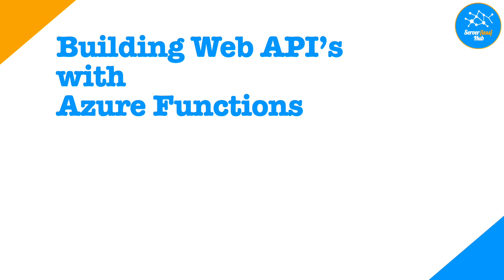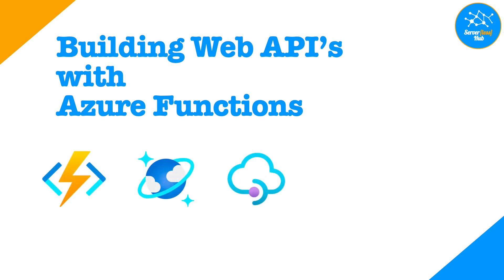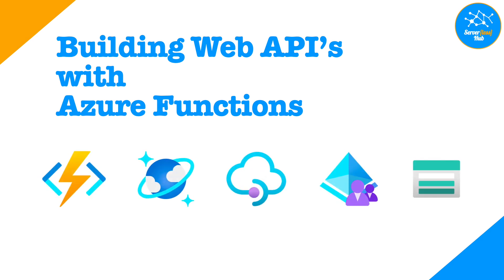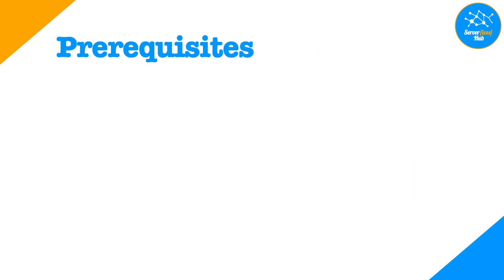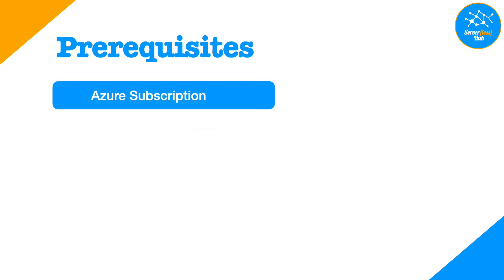Hello and welcome back to Serverless Hub for a new video series on how to build web APIs with Azure Functions. In this series we will be learning how to provision function apps, Cosmos databases, Active Directory B2C tenant, and an API Management. You will need to have an actual subscription to practice the labs in this series.